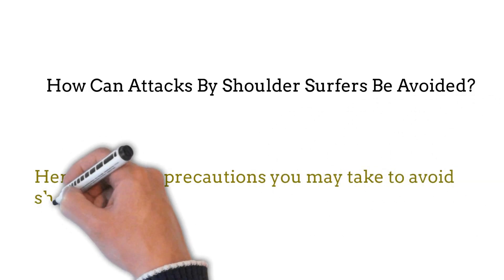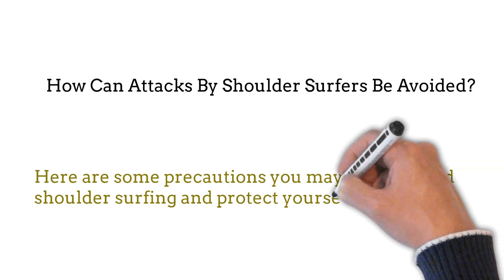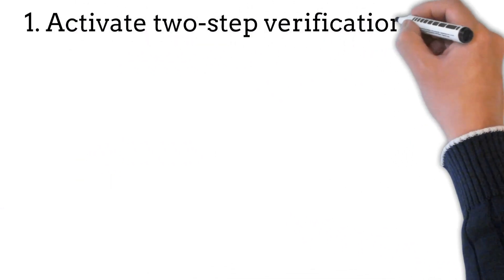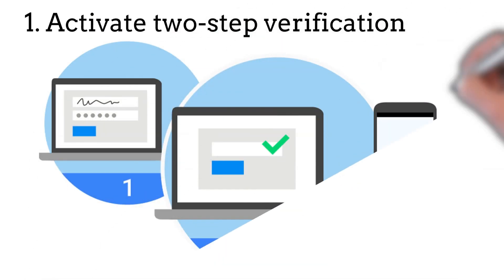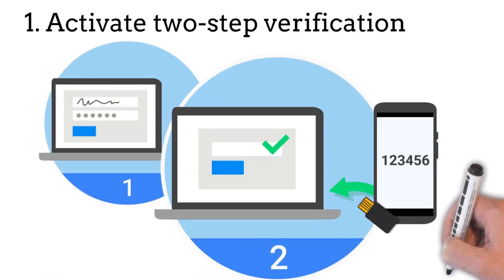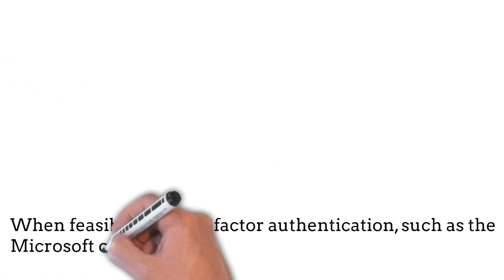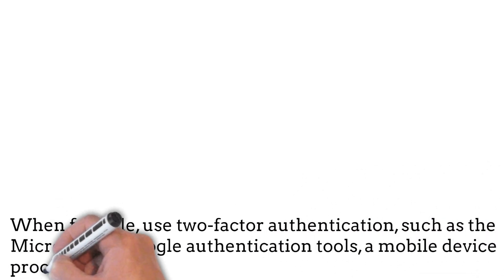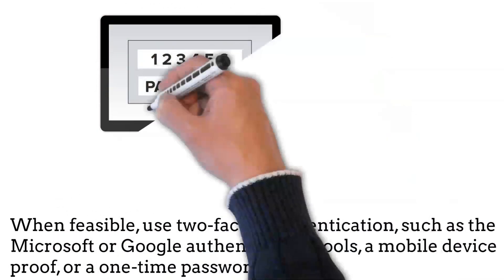Here are some precautions you may take to avoid shoulder surfing and protect yourself from its risks. The first point is to activate two-step verification. Using multi-factor authentication tools, such as Microsoft Authenticator or a mobile device prompt or one-time password, adds an extra layer of security.